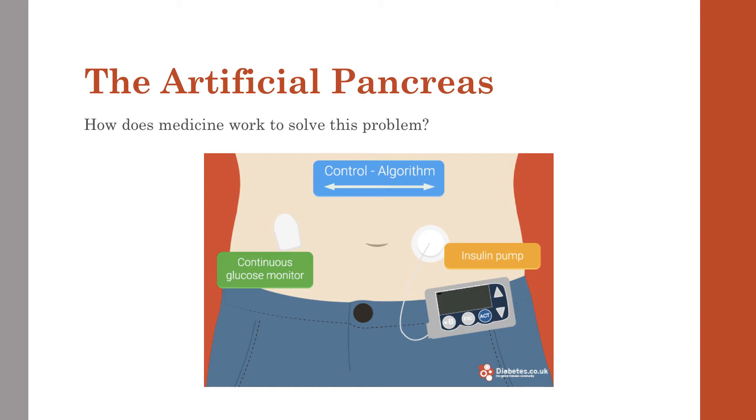Sometimes an artificial pancreas device is also referred to as a closed loop system, or an automated insulin delivery system.